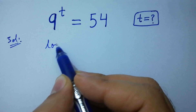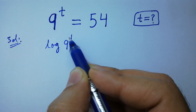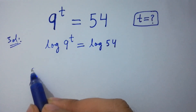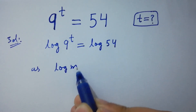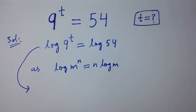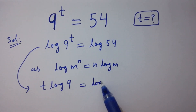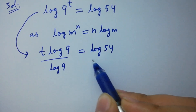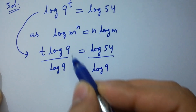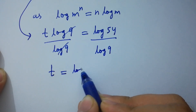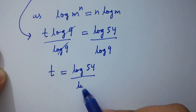Take log on both sides. As we know, log m to the power n equals n log m. We get t log 9 equals log 54. Divide by log 9 on both sides — log 9 and log 9 cancel — so t equals log 54 over log 9.